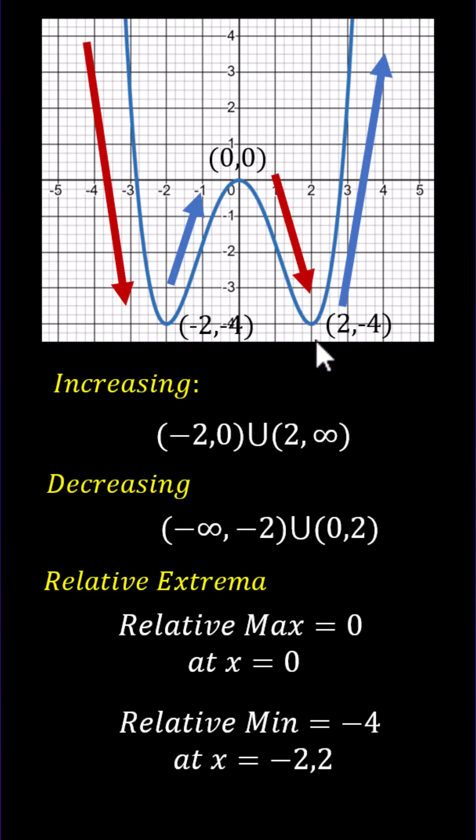And because these two points are the lowest points of the entire graph, we could also say that -4 is the absolute minimum or global minimum.